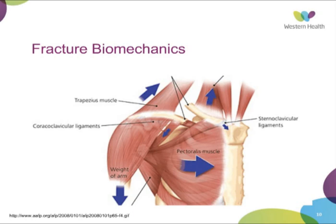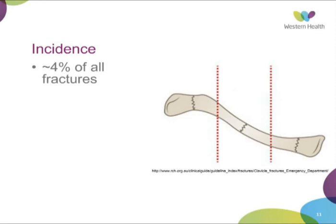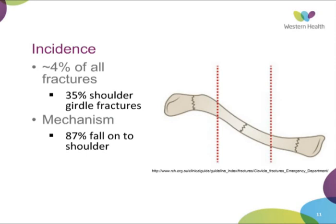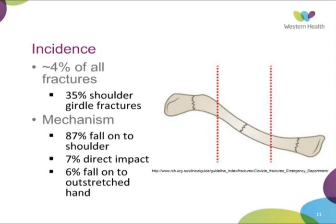Clavicle fractures represent about two and a half to five percent of all fractures, depending on which study you read, and they're about one-third of shoulder girdle fractures. The majority result from a fall directly onto the shoulder, with a minority being direct impact injuries, and fewer still being falls on an outstretched hand. When you look at the clavicle in thirds, the majority occur in the middle, then lateral, followed by medial.